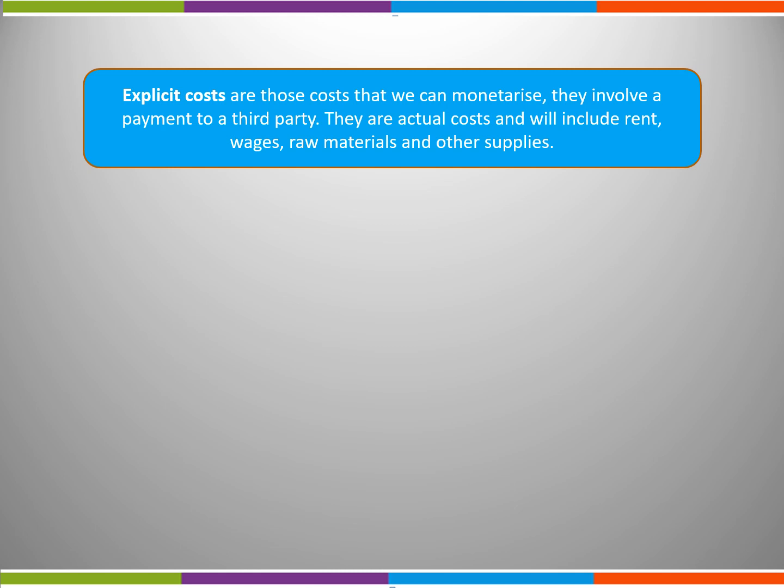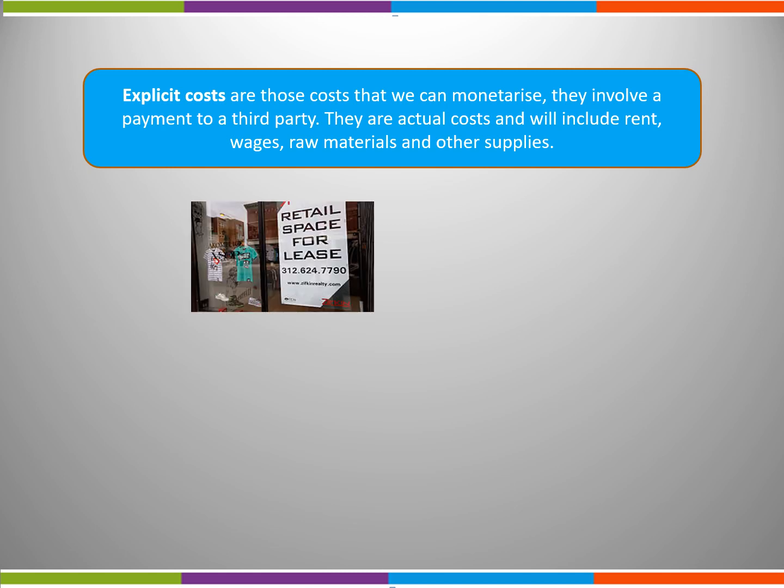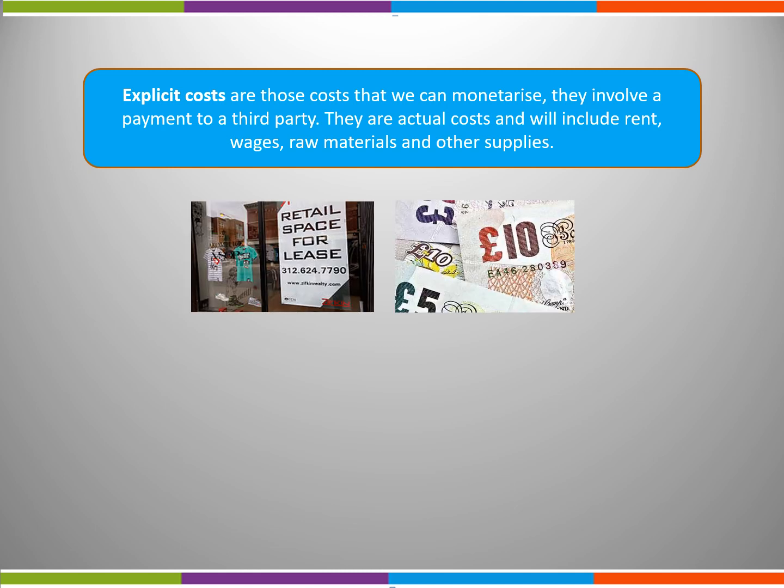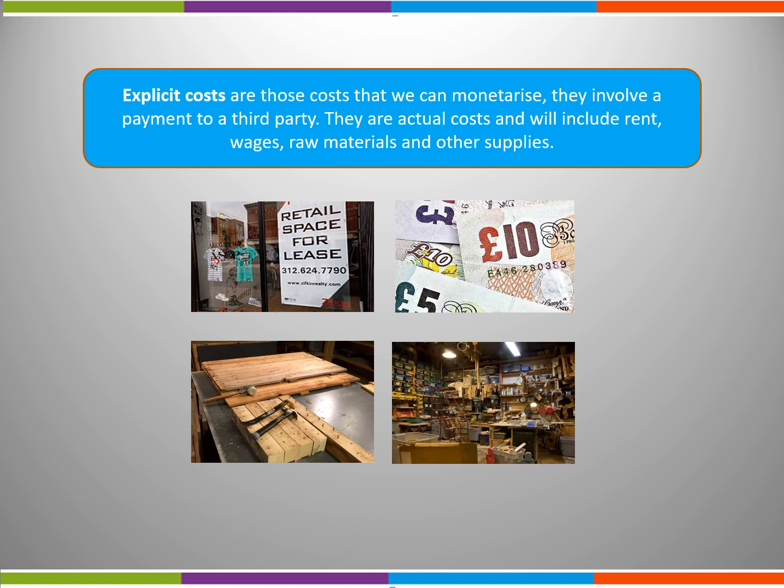Explicit costs are the same as total costs. They are all of the fixed and variable costs in aggregate. They are costs that we can monetarise and they involve a payment to a third party. They are actual costs and will include rent, wages, raw materials and other supplies.